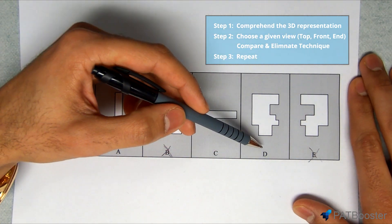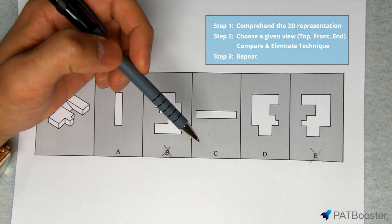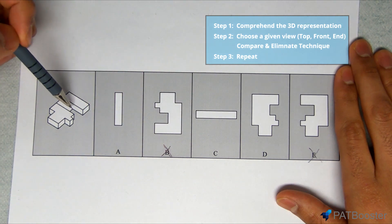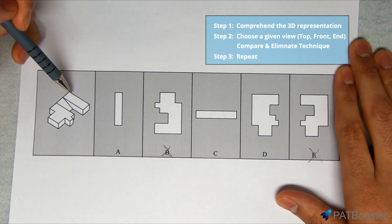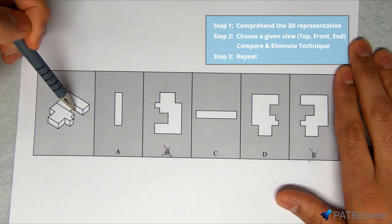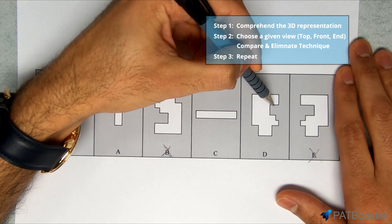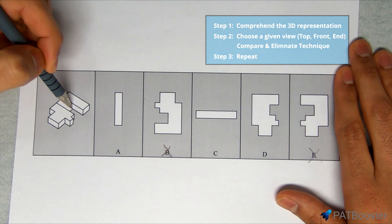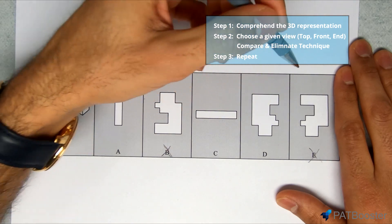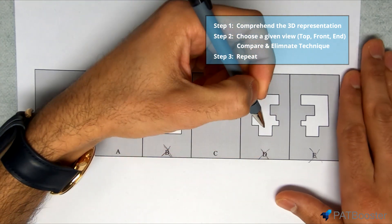So now that D is the only top view remaining, we got to compare it entirely with the 3D representation to make sure nothing else is off. So let's just start from here going around, this looks good and then, okay actually this line, this looks too short. Just comparing it with the line here I think this should be a little bit longer, it should come out a little bit more and I feel pretty confident about that so I'm actually going to cross off D as well.